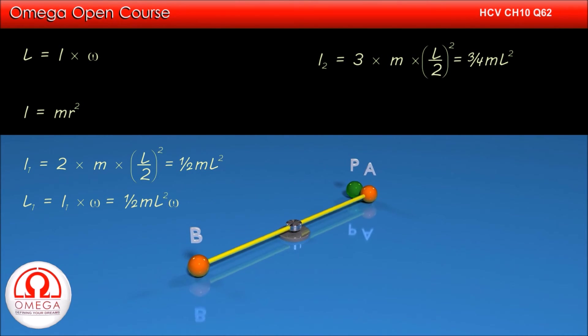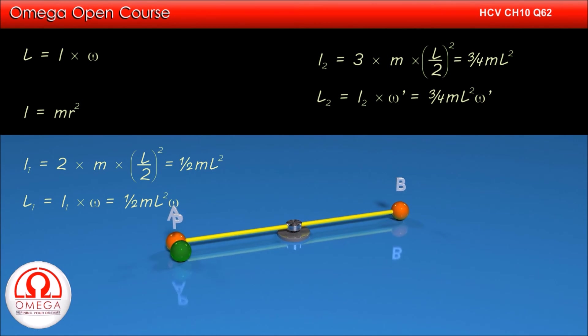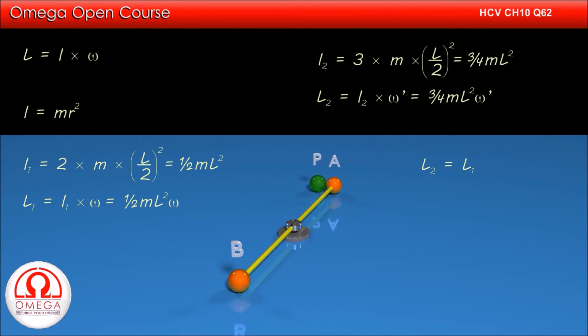If the final angular speed be omega dash, then final angular momentum is equal to 3 by 4 ML squared times omega dash. This final angular momentum must be equal to the initial angular momentum.